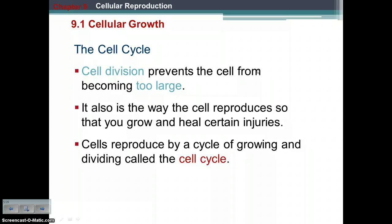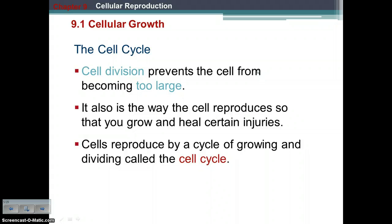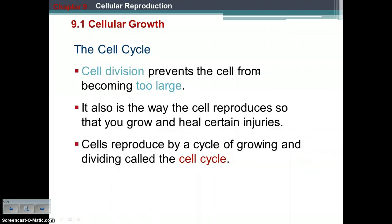The cell will basically fill with waste and not have enough nutrients to support it. So the cell cycle — cell division — prevents the cell from becoming too large to support itself. This is how you are able to grow, and this is how, when you are injured, your body is able to heal itself. That whole process of growing and dividing is called the cell cycle.